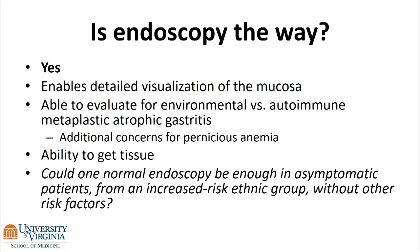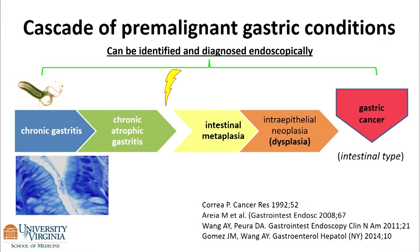Endoscopy enables, at this time without better biomarkers, a detailed visualization of the mucosa. We can evaluate it for environmental versus autoimmune metaplastic atrophic gastritis. In this day and age you can't order a Schilling test, so I believe we're often the first people to diagnose pernicious anemia. You can get tissue. And one question we can discuss: could one normal endoscopy be enough in asymptomatic patients from increased-risk ethnic groups without other risk factors? All of these lesions in the Correa cascade can be diagnosed and identified endoscopically — this is the power of endoscopy when done properly.